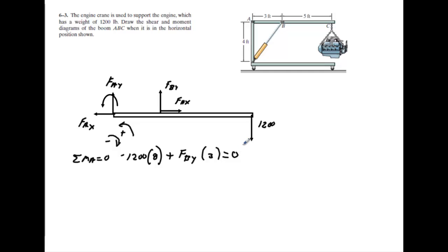All right, so run that number right now. Clear. All right, 1,200 times 8 divided by 3 means that the Y component of B is equal to 3,200 pounds and that's going up.